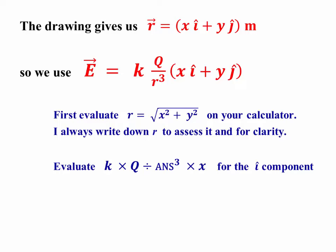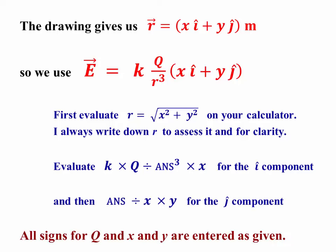Now, although I may have written down r, I'm not going to put it back into my calculator. I'm going to do k times q divided by answer cubed and then multiply that by x. When I've done that, I've got everything in the problem I need to get the i hat component including its sign, because any sign for q and any sign for x is going to be in this calculation.